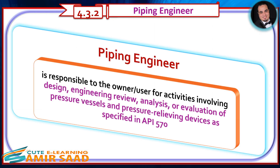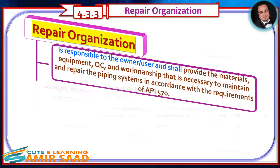The engineer is responsible to the owner-user for activities involving design, engineering review, analysis, or evaluation of pressure vessels and pressure relieving devices as specified in API 570. The repair organization is responsible to the owner-user and shall provide the materials, equipment, quality control, and workmanship that is necessary to maintain and repair the piping systems in accordance with the requirements of API 570.